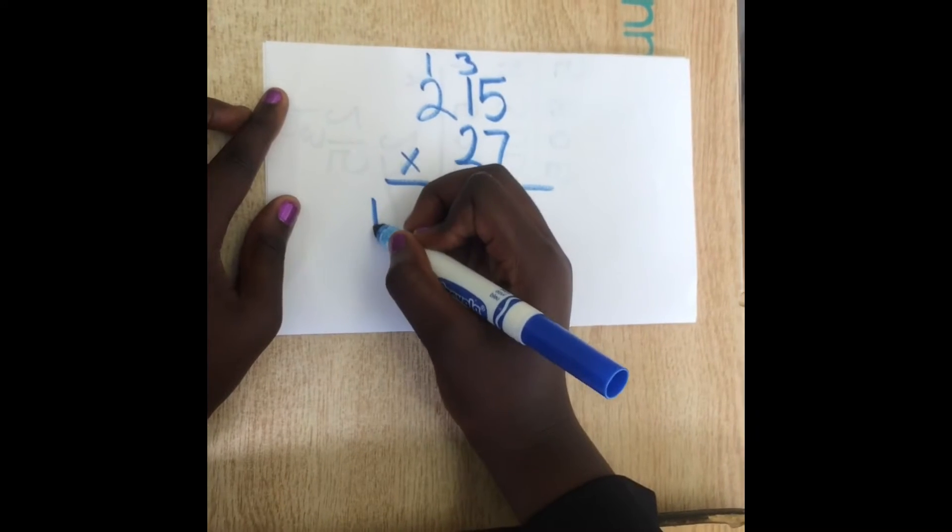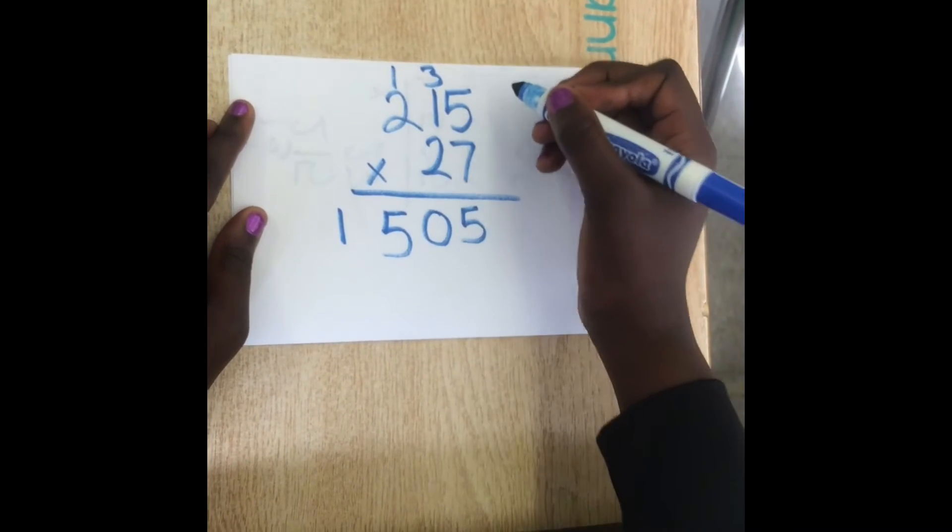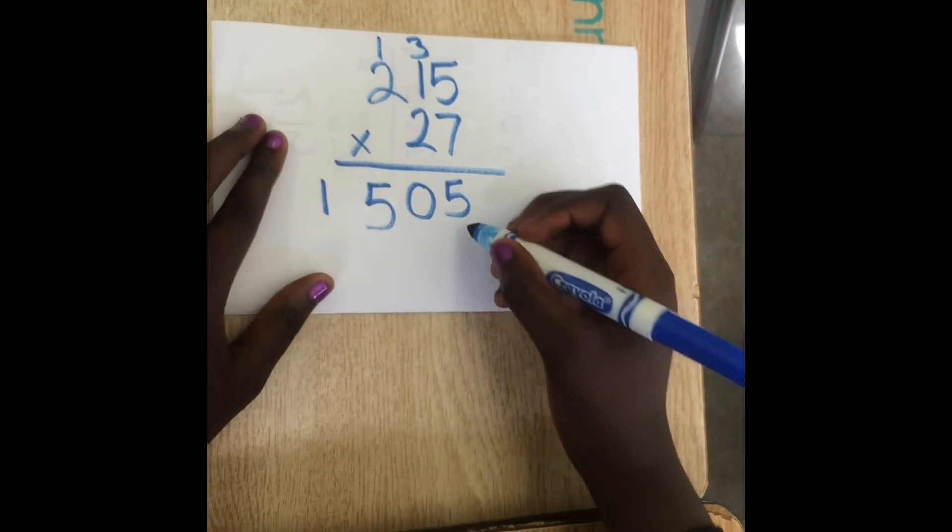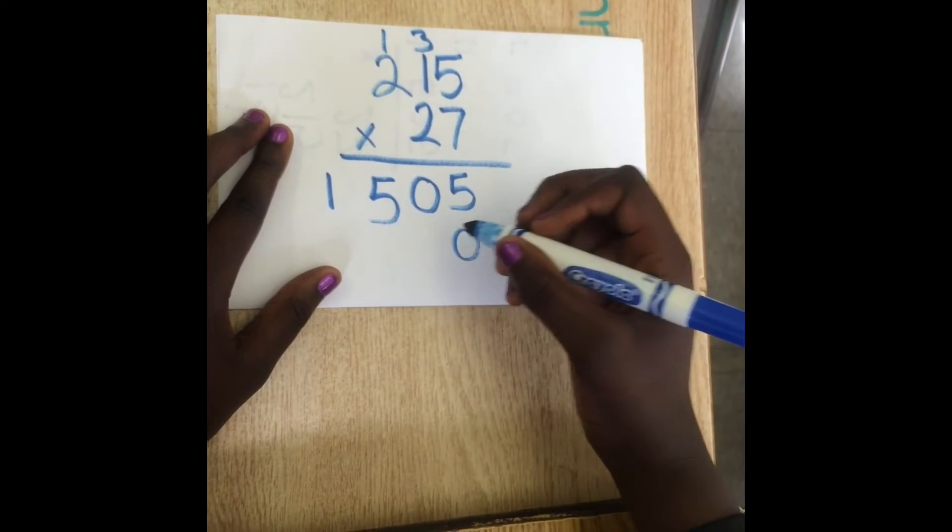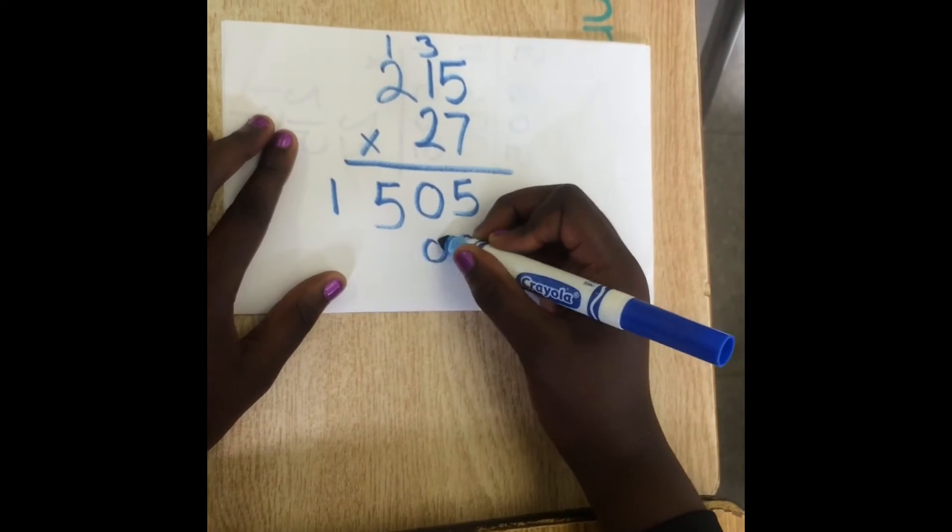Then you do 7 times 2 which gives you 14 plus 1 gives you 15. You put the 15 under the 2. Then you put the 0 under the 5 and you move over to the next column.